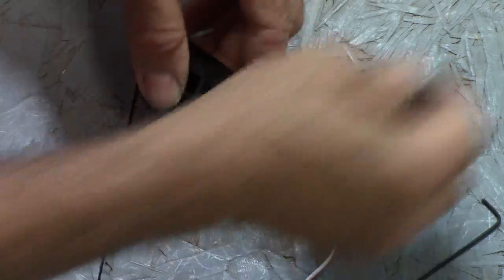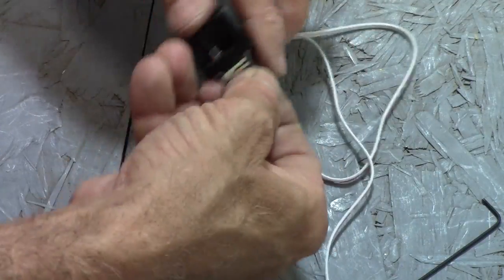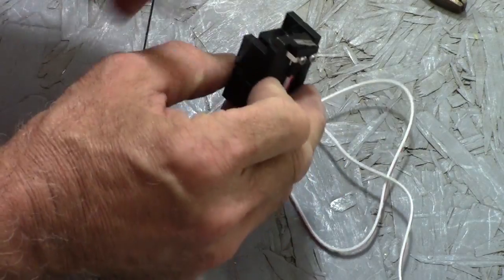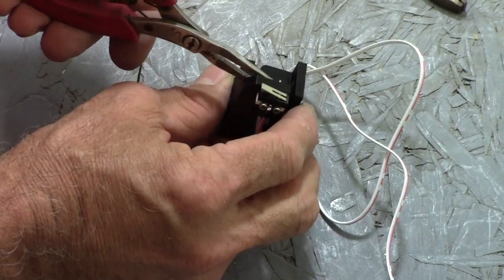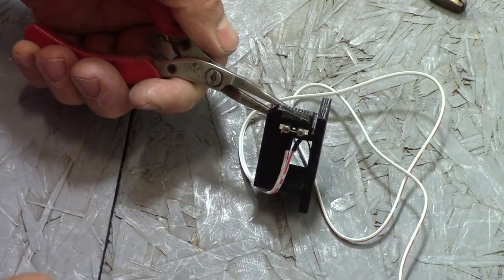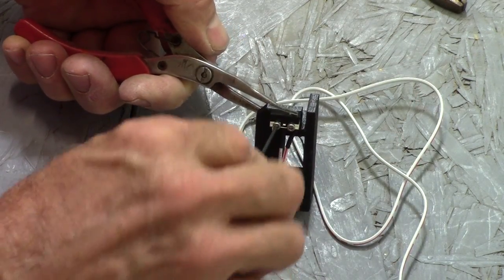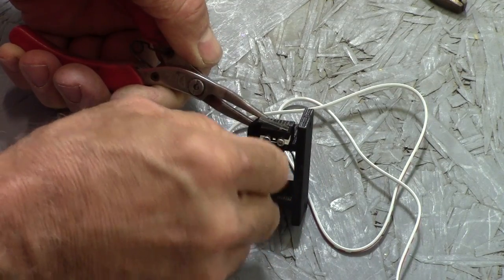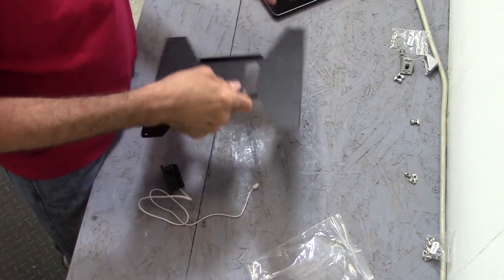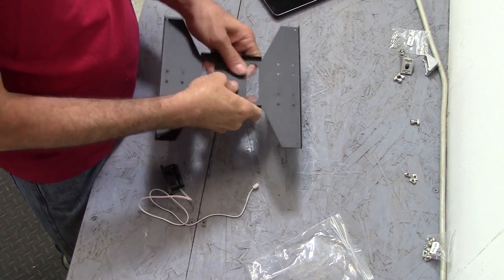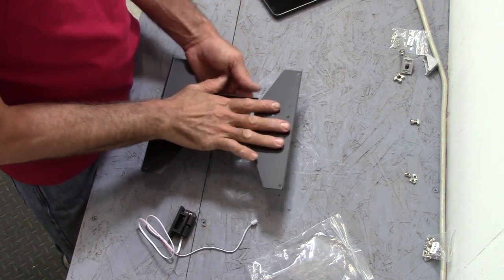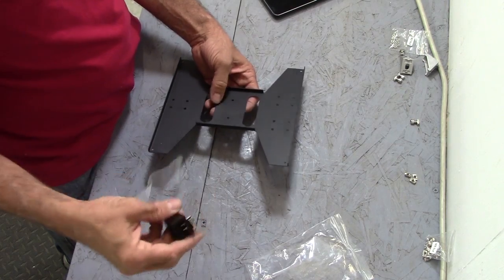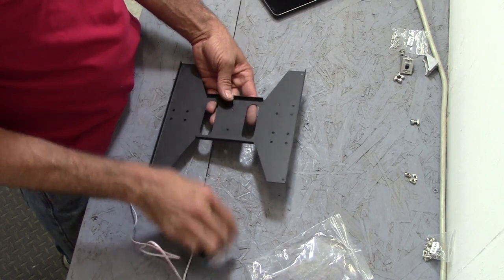We're going to hold that on there with two M2 by 16 bolts screws and a couple of M2 nuts. Some tiny hardware here. I'm going to hold the nut on the other side with some tiny pliers here and we'll tighten up the screw.